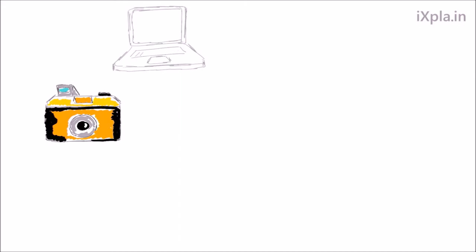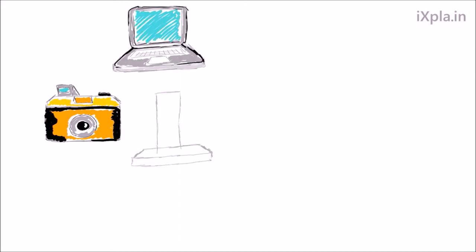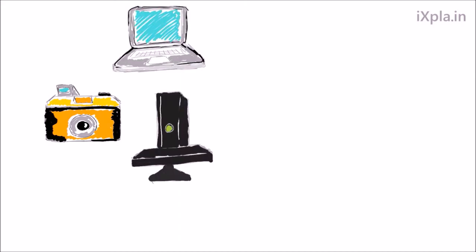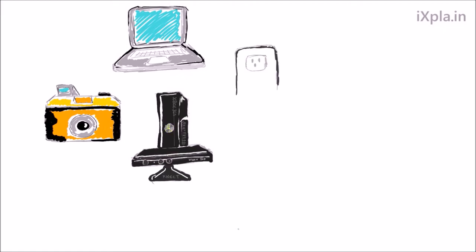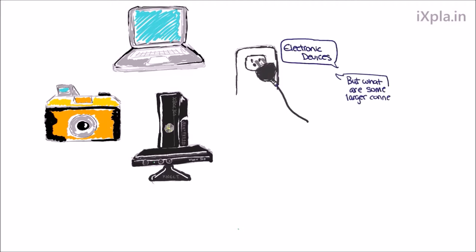Here are some objects that mostly anyone can recognize: a camera, a laptop, and a gaming system. And though the common similarity between them is that they're all electronic devices, what are some other connections that we can make from these objects?